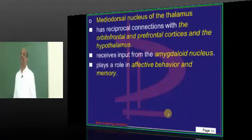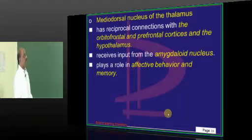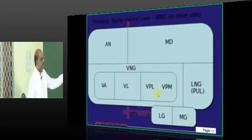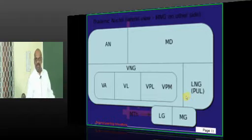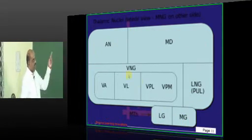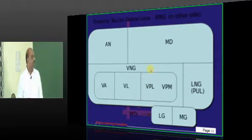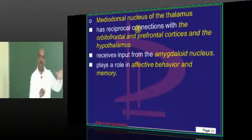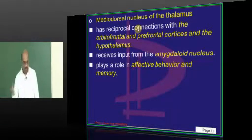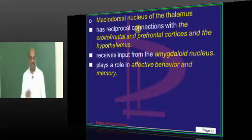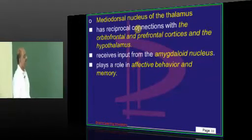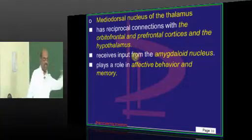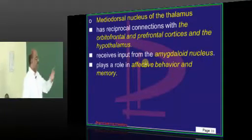The second important component is the mediodorsal nucleus of the thalamus. The thalamus contains many nuclei — anterior nucleus, mediodorsal nucleus, ventral anterior, ventral lateral, ventral posterolateral, ventral posteromedial, lateral geniculate body, medial geniculate body, and so on. The mediodorsal nucleus has a reciprocal relationship with the orbitofrontal and prefrontal cortices and the hypothalamus. It also receives input from the amygdala.